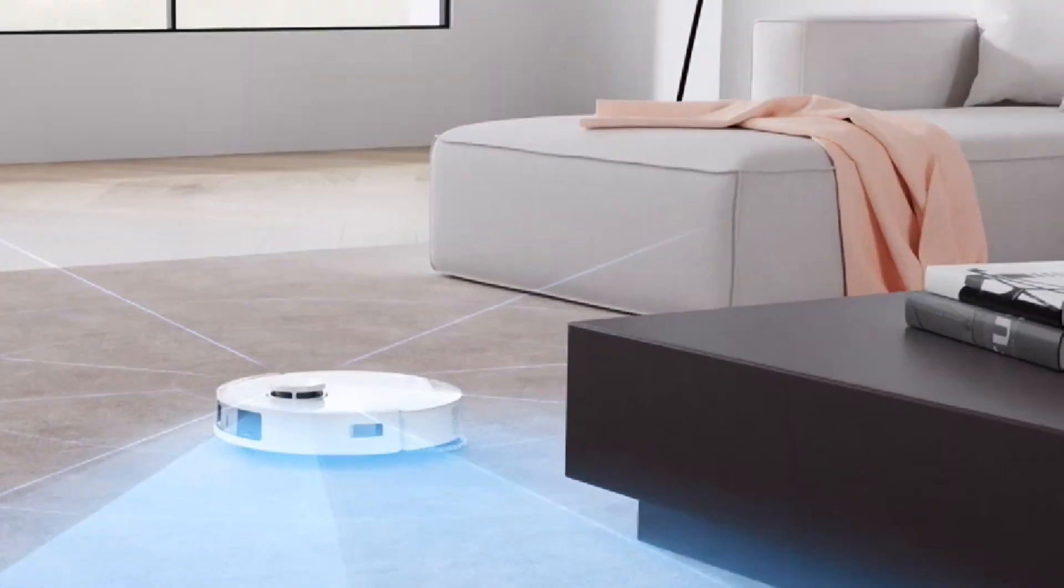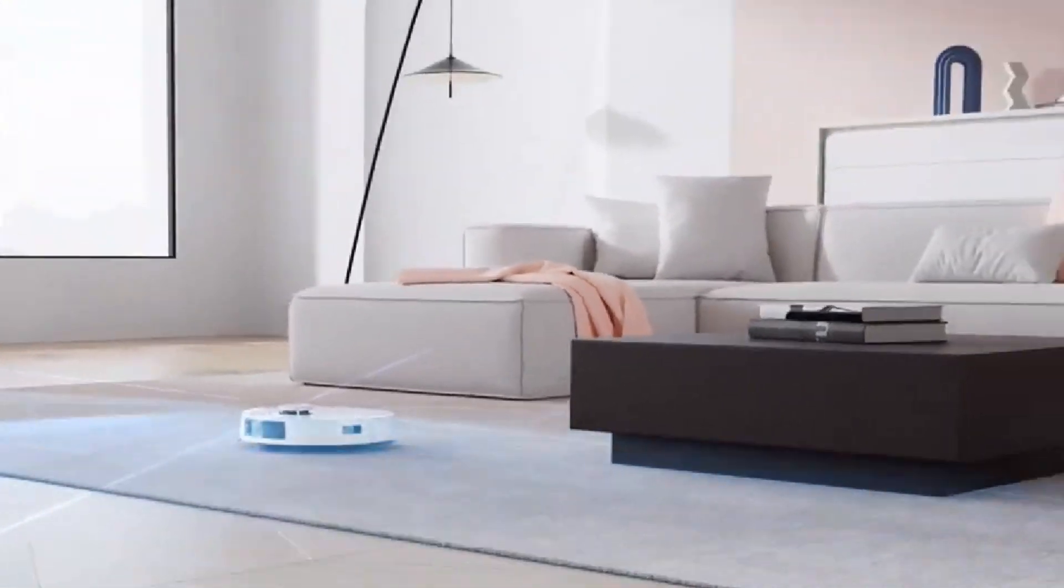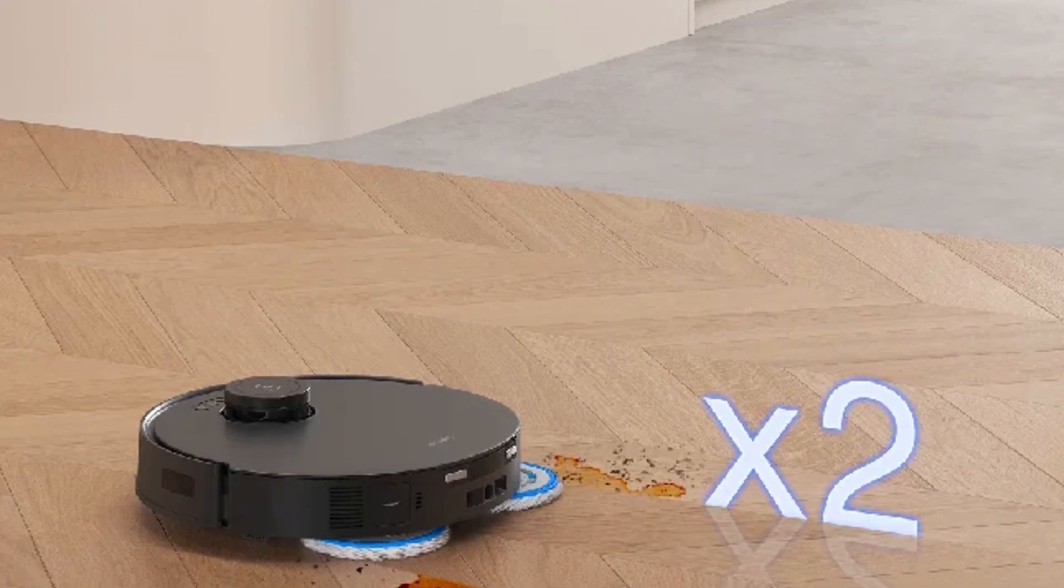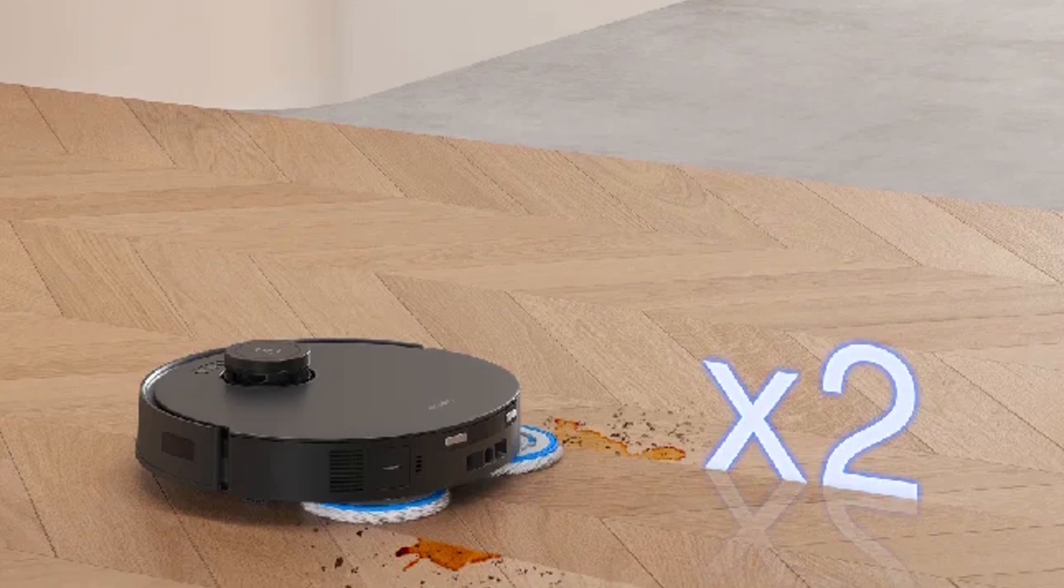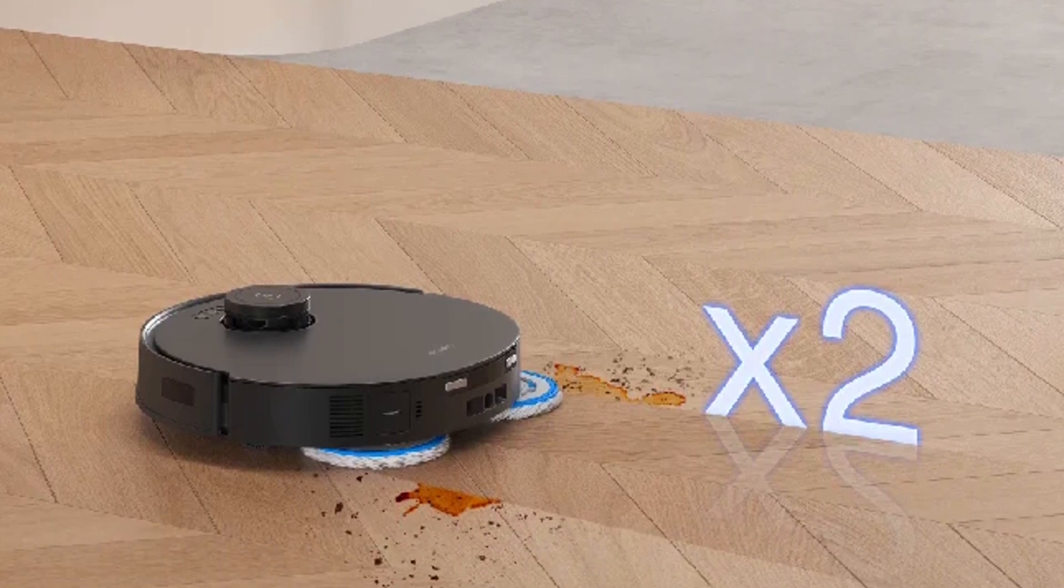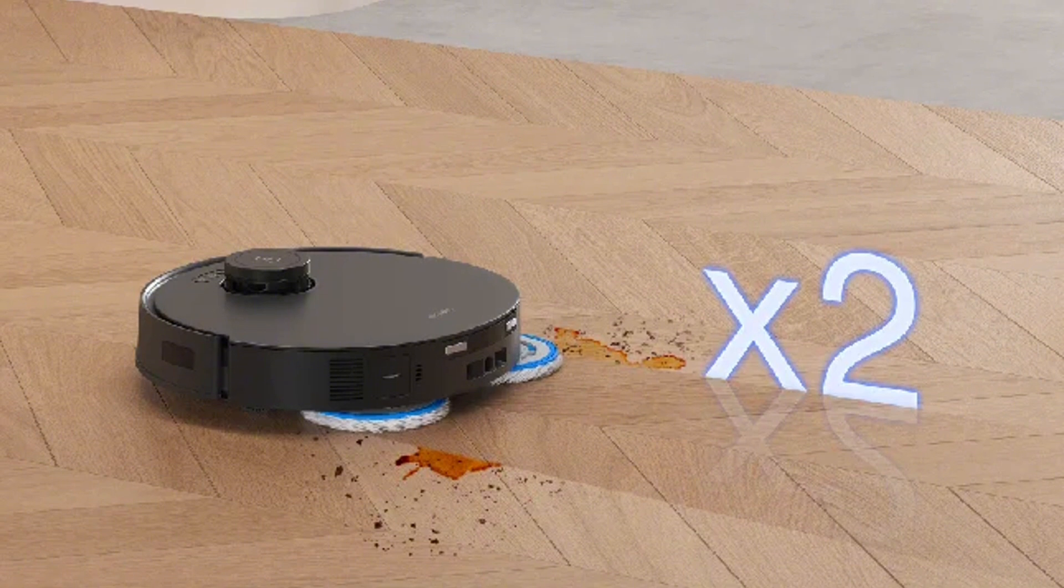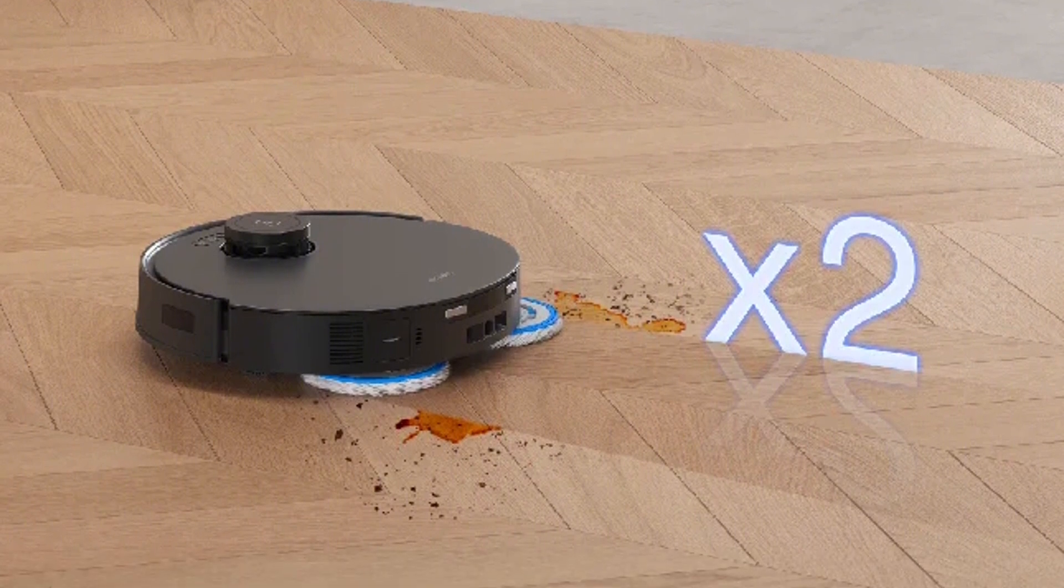One of the standout aspects of its design is the strategic placement of the brush and suction ports. The side brushes extend slightly beyond the vacuum's body, allowing it to effectively sweep up debris from corners and edges, maximizing its cleaning coverage.